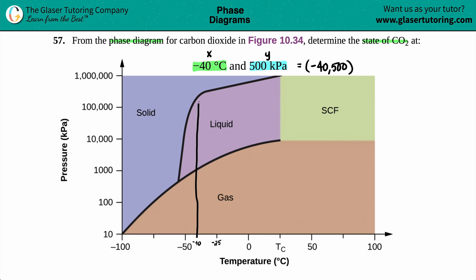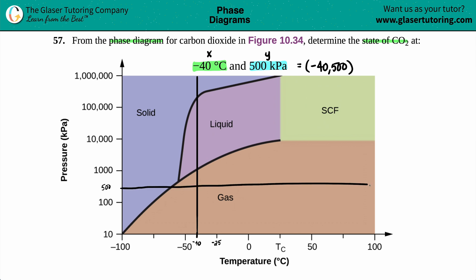I'll draw a straight line up from negative 40 to visualize all the points along that temperature. Now for the y-axis — 500 is between 100 and 1000. There are nine hundreds in between, so roughly in the middle would be around 500, and I'll draw a horizontal line there.